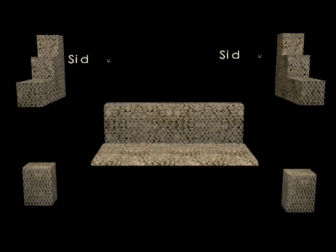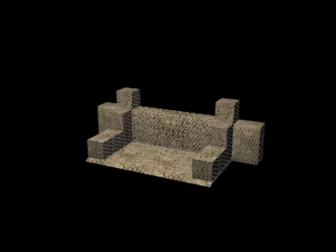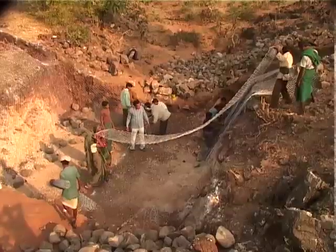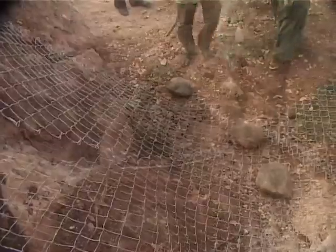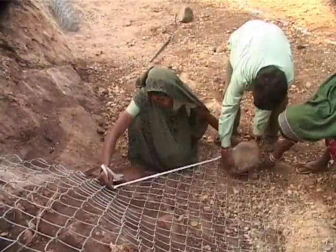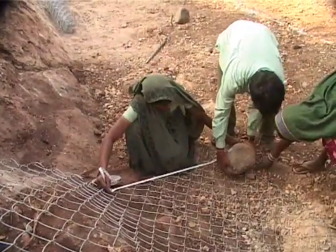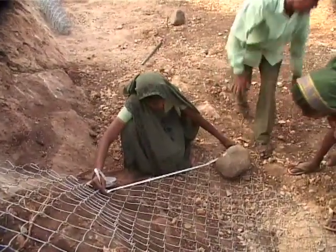A gabion has different components. The one meter spread along the bed of the apron is important as it anchors the entire apron to the bed of the stream.